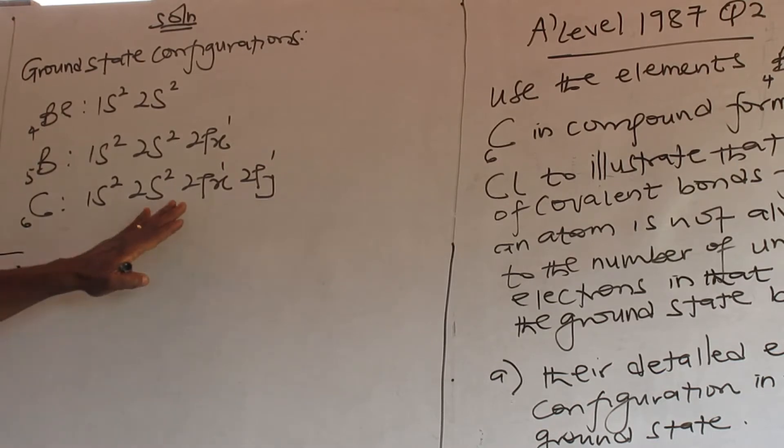So based on Hund's rule of maximum multiplicity, right? The degenerate orbitals are filled first before pairing. That is why I didn't put all into px. Good.